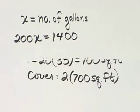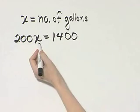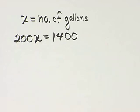Once again, 200 is how much one gallon covers, so 200 times however many gallons we have should equal 1,400 square feet. That's the equation we'll solve.